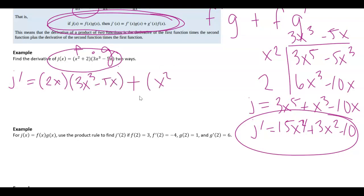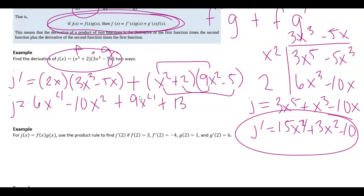Plus leave f alone and then times the derivative of g. So I kind of take turns taking derivatives of each function and add them. When you do that you end up getting 6x to the fourth minus 10x squared plus I end up getting 9x to the fourth plus 13x squared minus 10, which equals 15x to the fourth plus 3x squared minus 10.